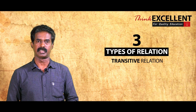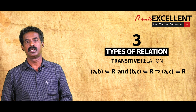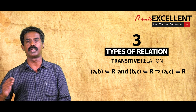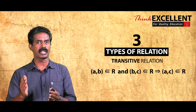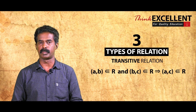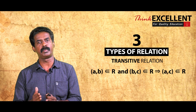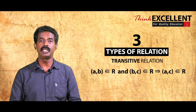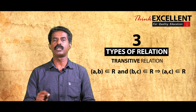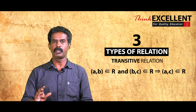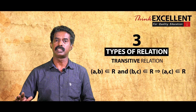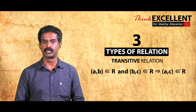The third is transitive relation: if A is related to B and B is related to C, then A must be related to C. Note: if A is related to B but B is not related to anything, you do not need to check — the relation is still transitive. You can only say it is not transitive if A is related to B and B is related to C but A is not related to C.